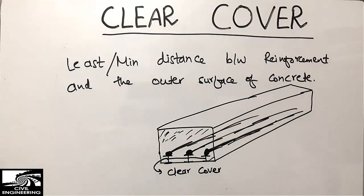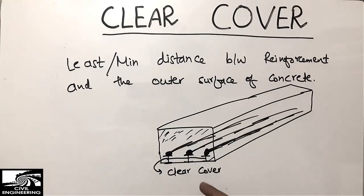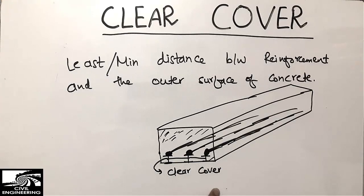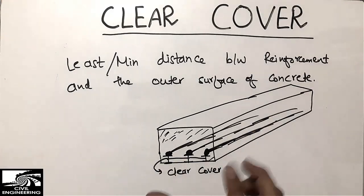The clear cover changes depending on the environmental condition and the type of structure you are constructing. It differs for different members — for a column it may be different, for beams it may be different — and it varies based on environmental conditions.